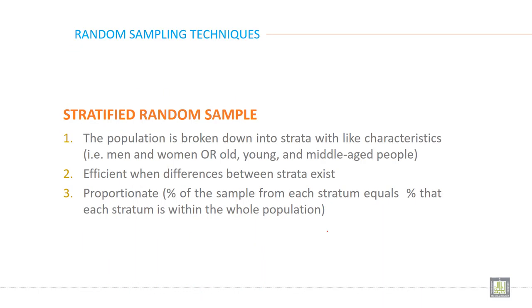Then the third is stratified random sample. In this, the population is broken down into strata with like characteristics - men and women, old and young, middle-aged people.